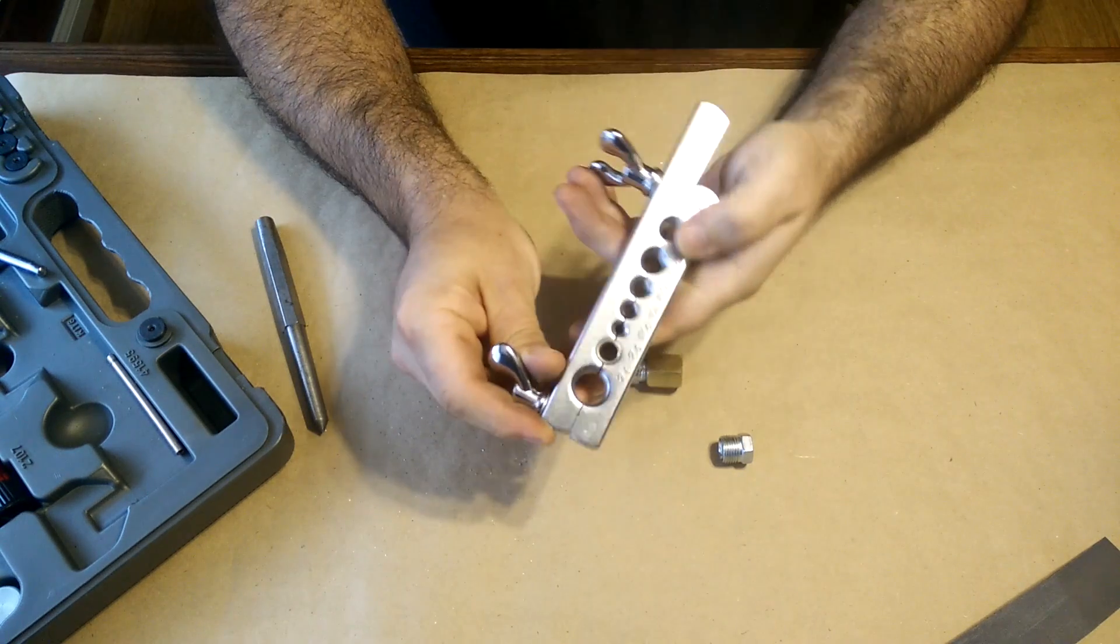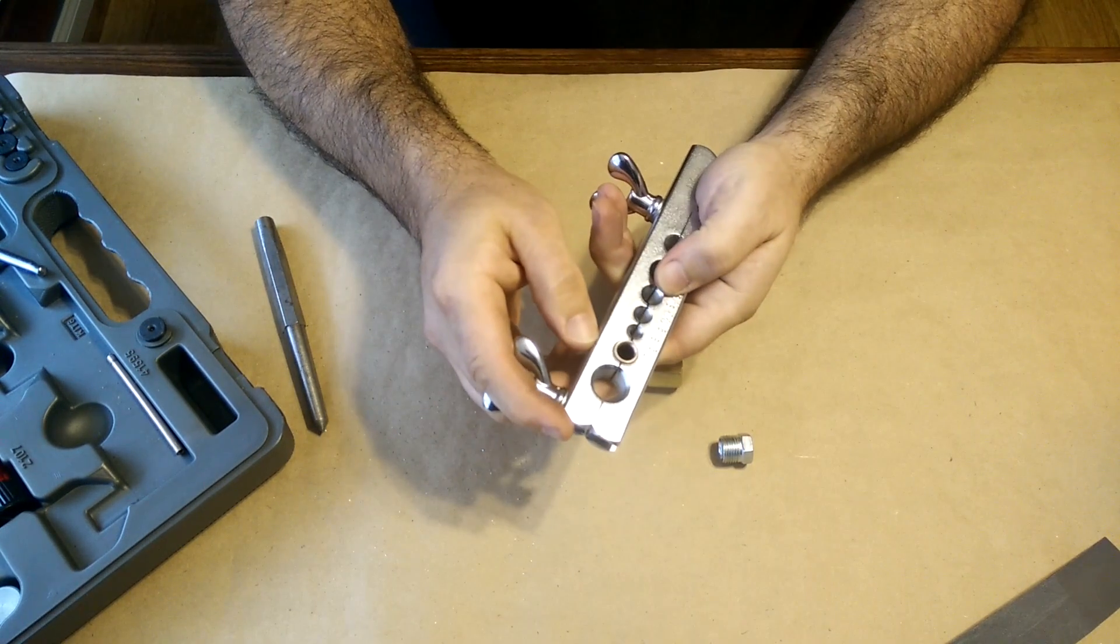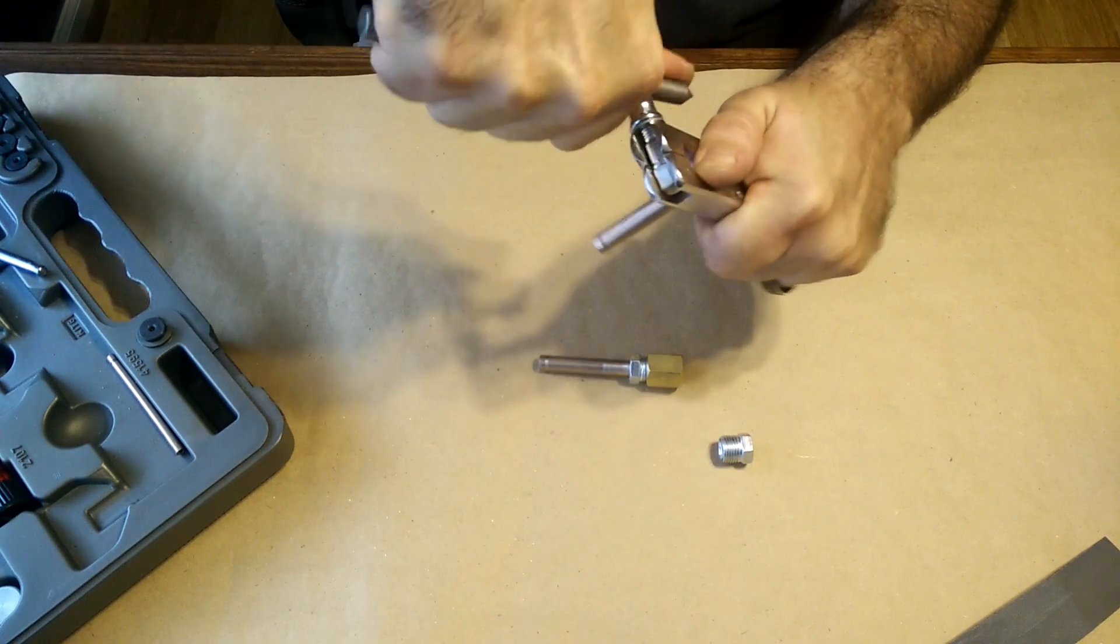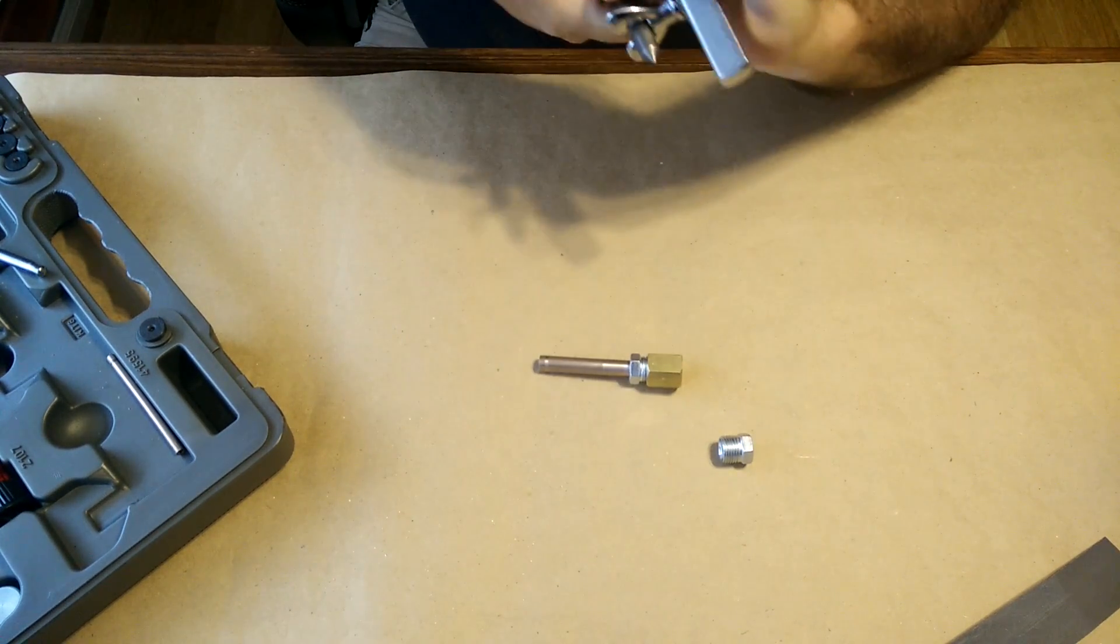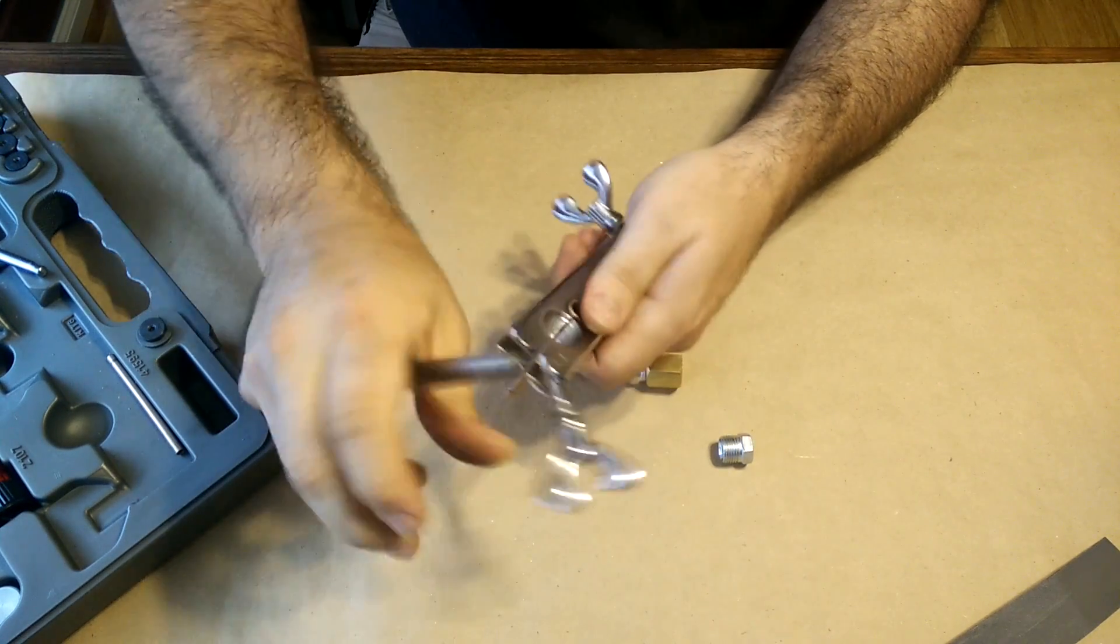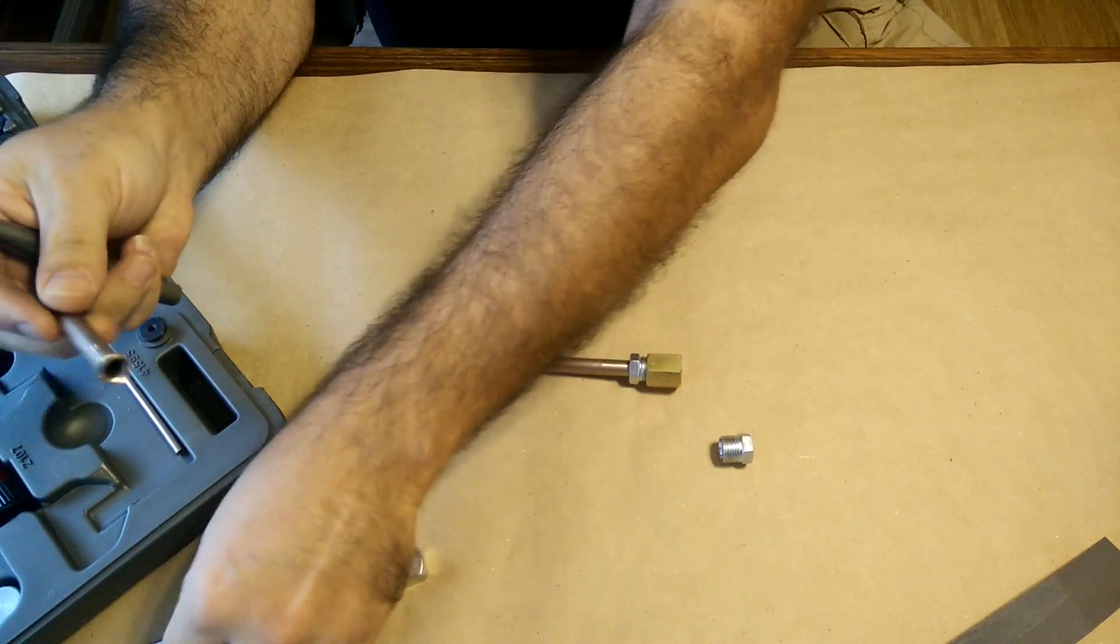So what you're left with is a pretty nice double flare, 45 degree. Now the other thing, a lot of these tools, what will happen is you'll get a lot of burrs here, especially on the cone.